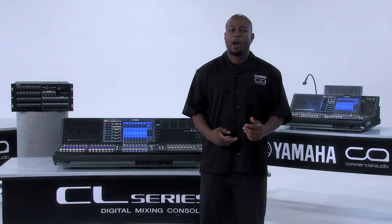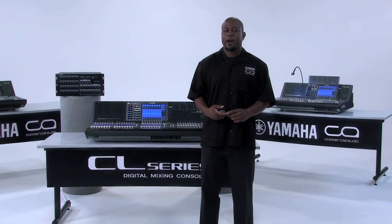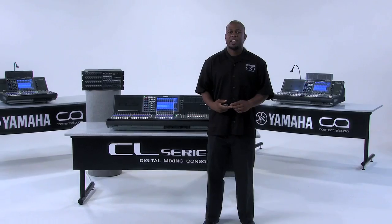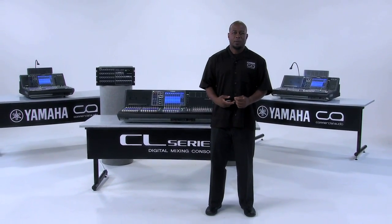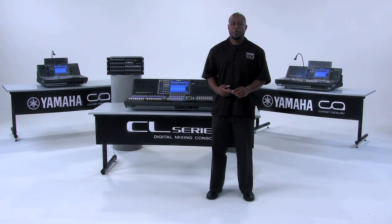When connecting your console and your remote I/O racks to the network, setting the unit ID will apply the default Dante network patching. If I have an RIO3224D, setting its unit ID to number one will take the 32 mic line inputs and apply them to Dante inputs 1 through 32. If I have an RIO1608D, setting its unit ID to number one will take the 16 mic line inputs and apply them to Dante inputs 1 through 16.